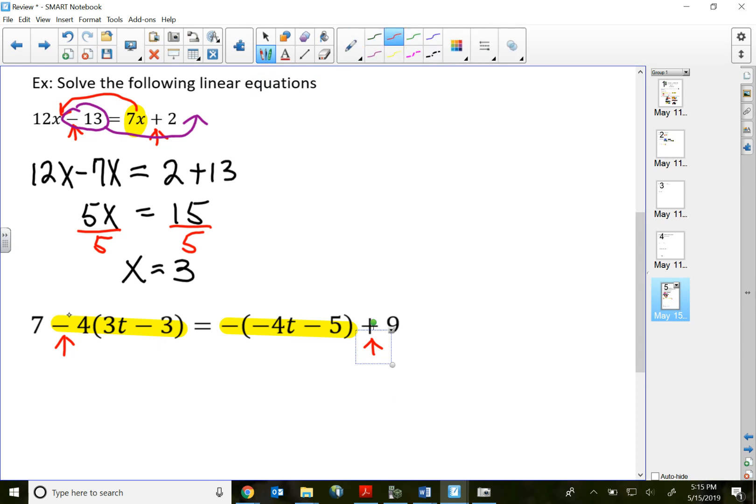Let me write it down. The first term 7 is still 7. Second term, negative 4 times 3t is negative 12t. Negative 4 times negative 3 is positive 12.